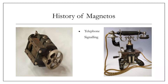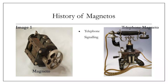Now let's discuss the history of magnetos. Image one represents a magneto which was used in earlier centuries, and a similar magneto is also present in our apparatus. Image two represents a telephone magneto. The legs of the telephone magneto are indeed permanent magnets, and a hand crank is also located at the left side of the telephone magneto.